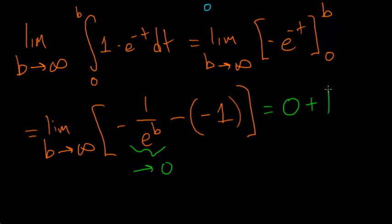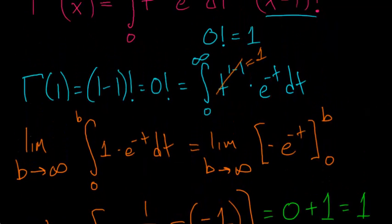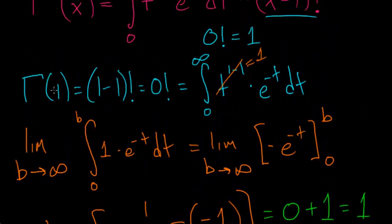So what we're left with is just 0 minus negative 1, which is the same thing as just adding 1. So this entire integral here is equal to 1. So what we've found is that gamma of 1, which is the same thing as 0 factorial, is equal to 1.